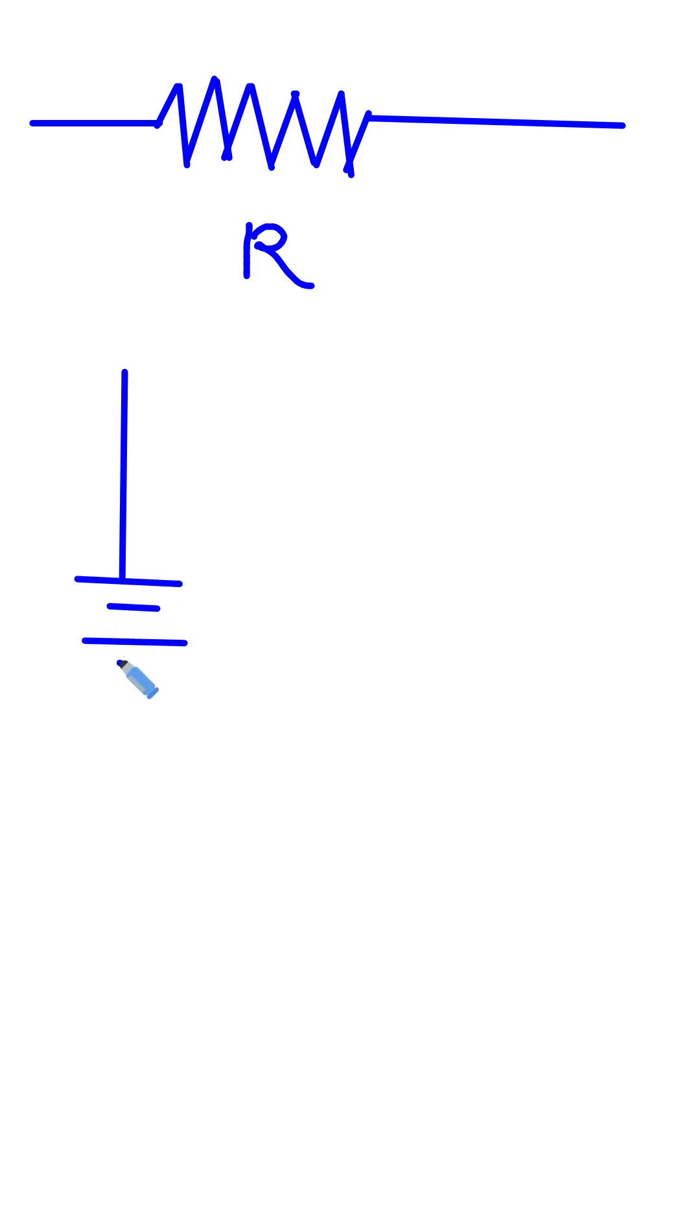Let's say this is a voltage source, and this is a resistor, and the current through this will be like this. The symbol for this is a zigzag line.